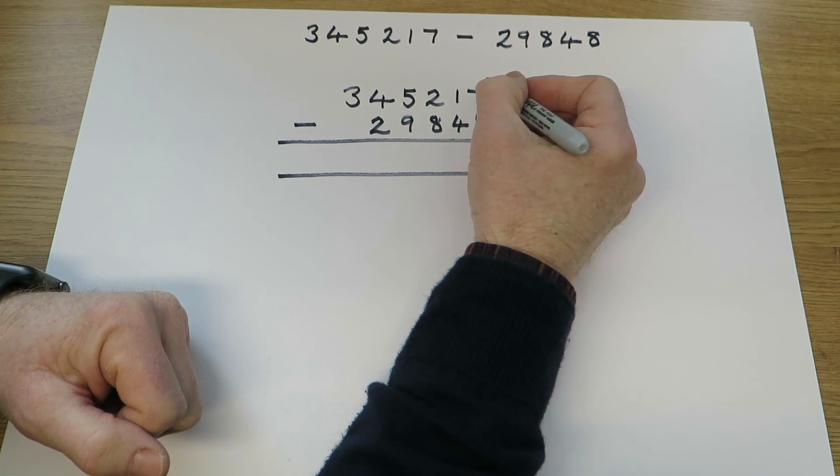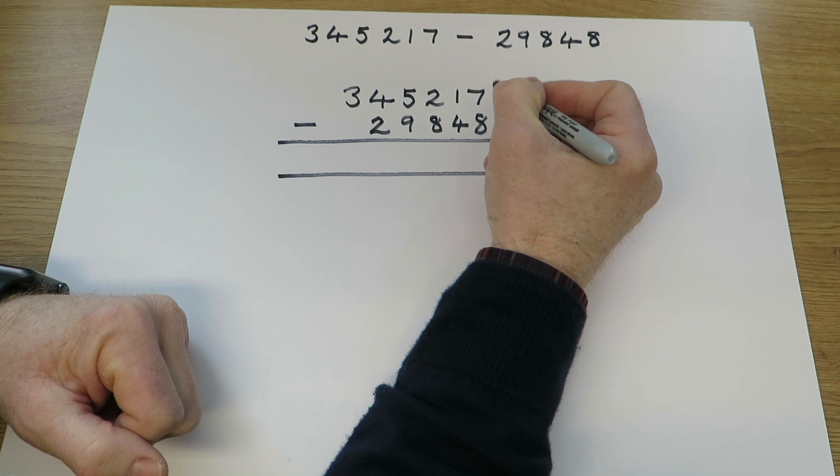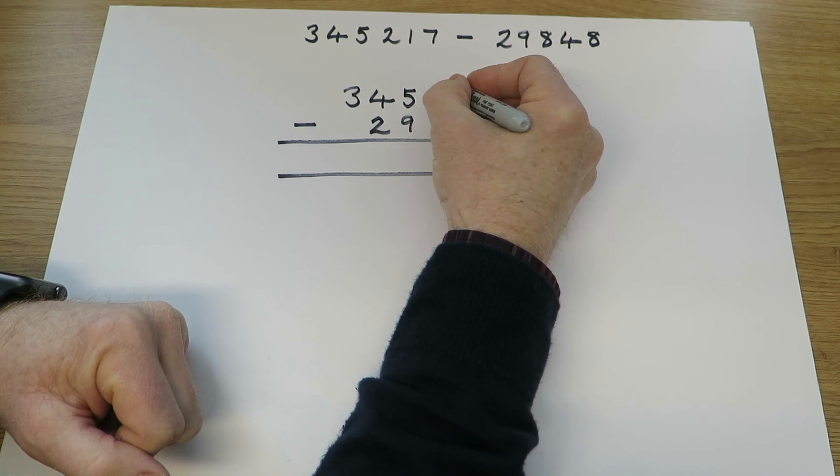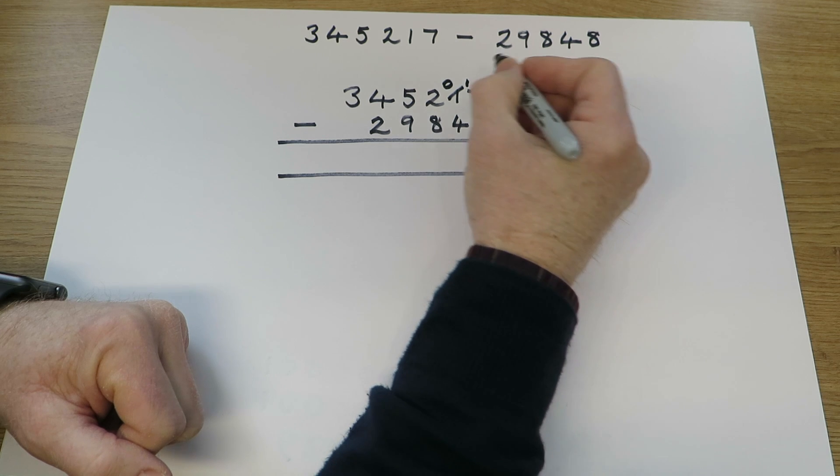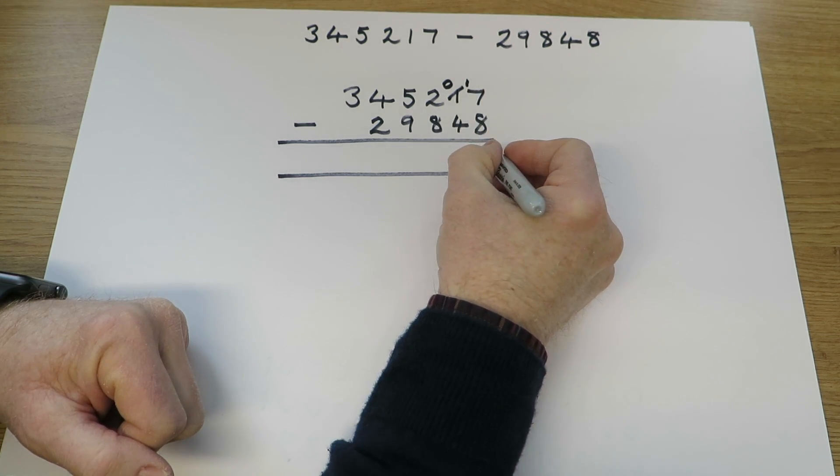Always starting at the right-hand side. 7 take away 8. We haven't got enough units, so we're using the only 10. That gives us 10 extra units. 17 take 8 is 9 units.